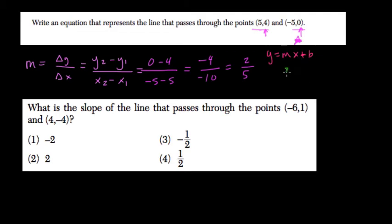To do that, I'm going to plug in my slope and one of the two points. I'll plug in the first point. So 2 fifths of 5, that's just 2—the 5s cancel out. And 2 plus b equals 4. Subtract 2 from both sides, and we realize b equals 2. So our equation will be y equals 2 fifths x plus 2.